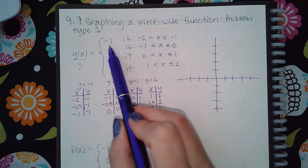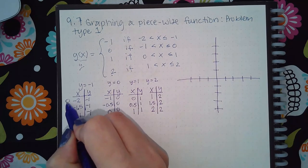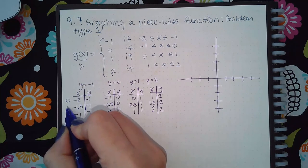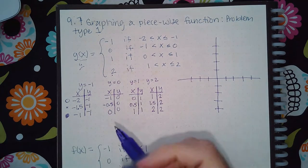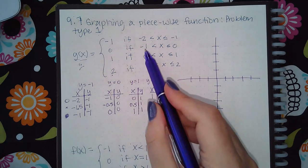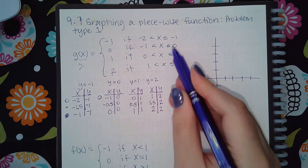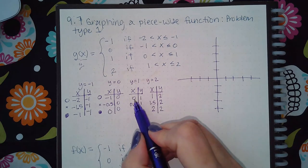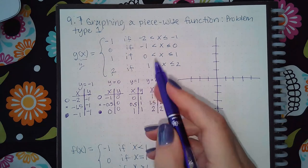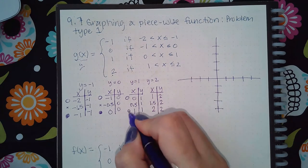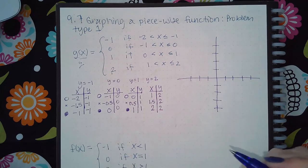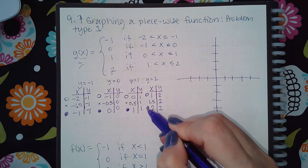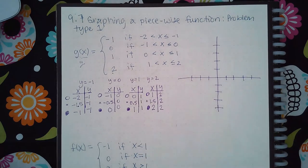For the top function, negative 2 gets an open dot because there's no equal bar, and negative 1 gets a solid dot. The middle point gets a regular dot marked with an x. For the next section, negative 1 is an open dot, 0 is a closed dot, and the middle is a regular dot. Then 0 is an open dot, 1 is a closed dot, middle is regular. And 1 is an open dot, 2 is a solid dot, middle is regular.